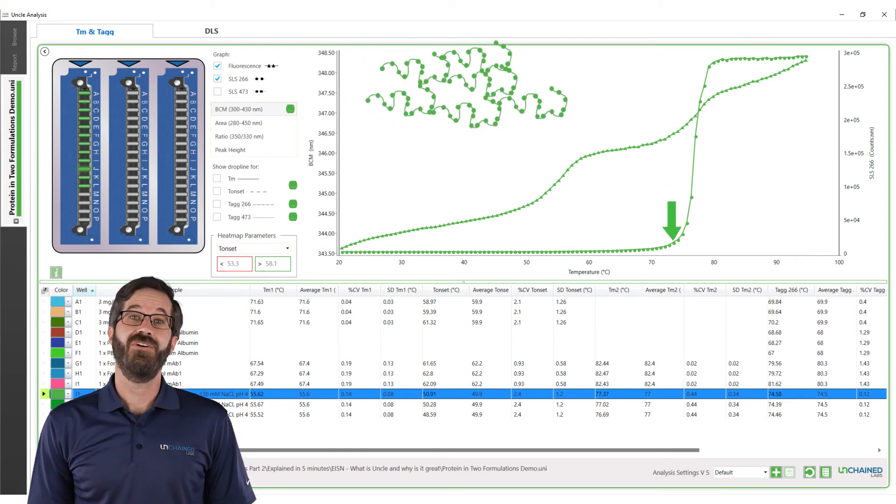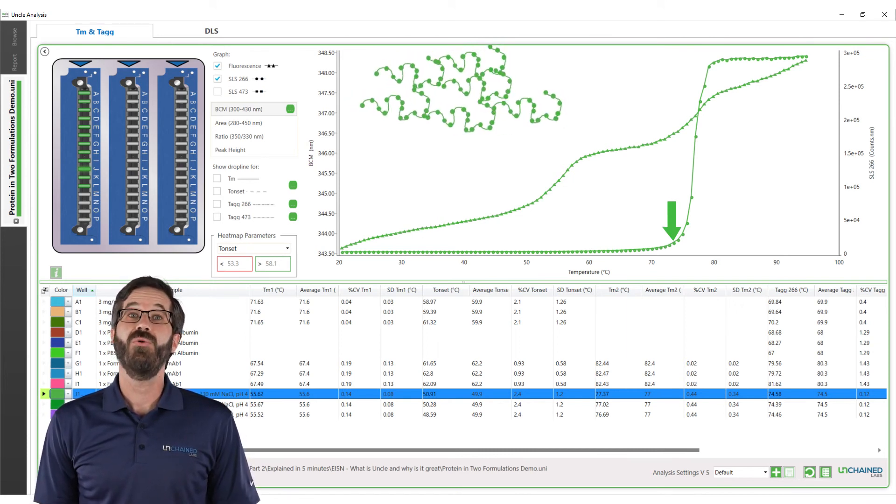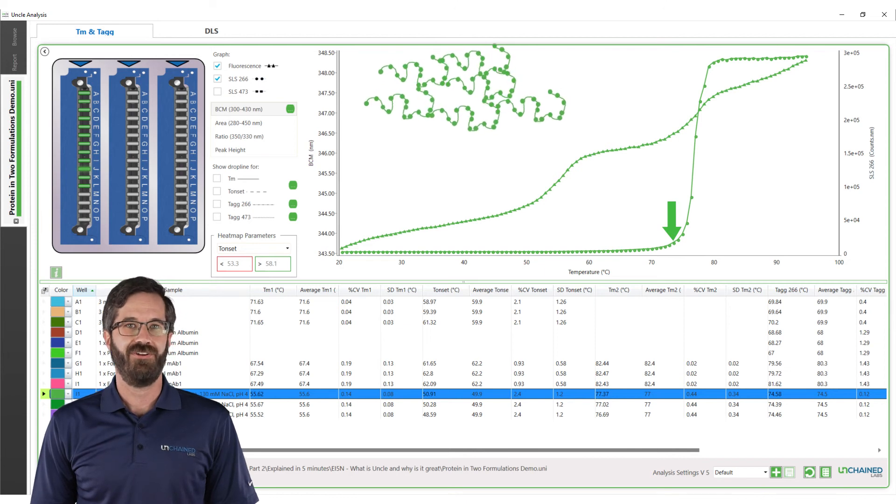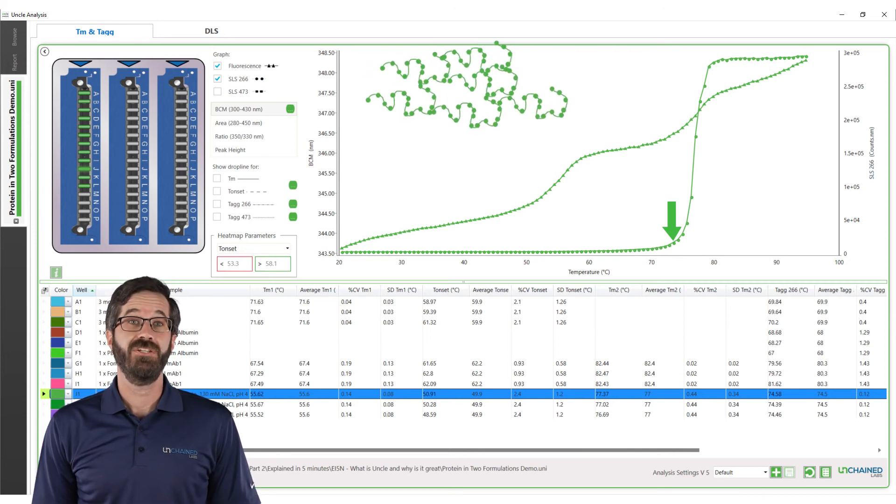Because we're measuring unfolding and aggregation simultaneously, UNCLE can link up these behaviors and know which unfolding event drives aggregation. Understanding that relationship is one of the key insights of UNCLE.